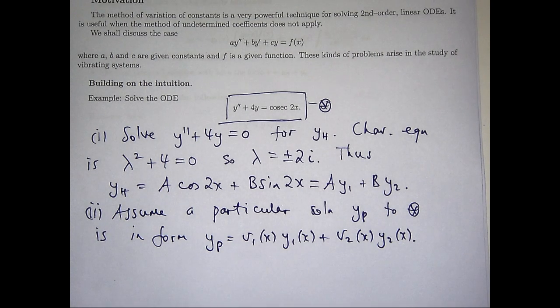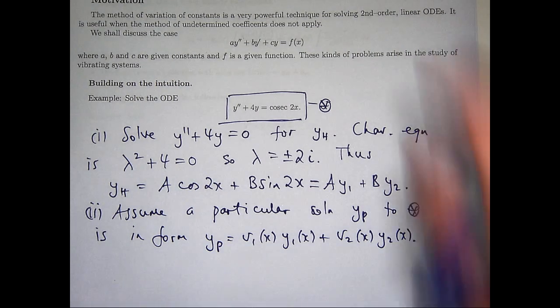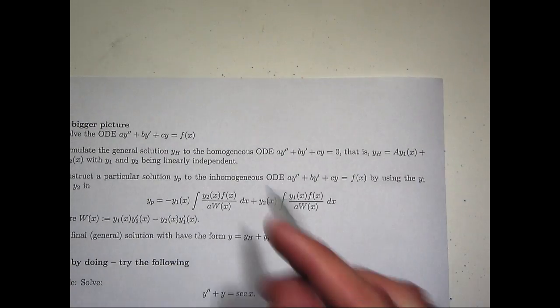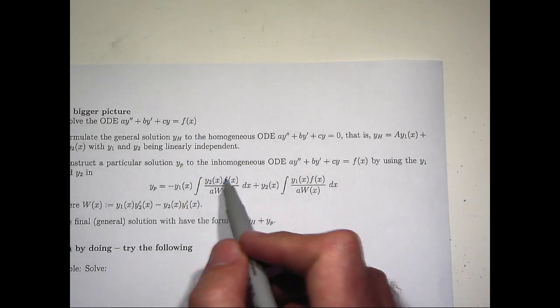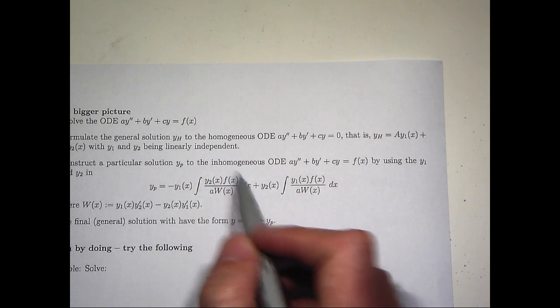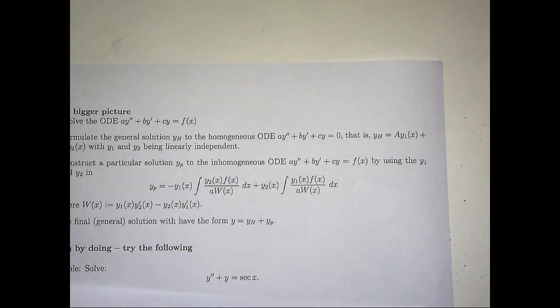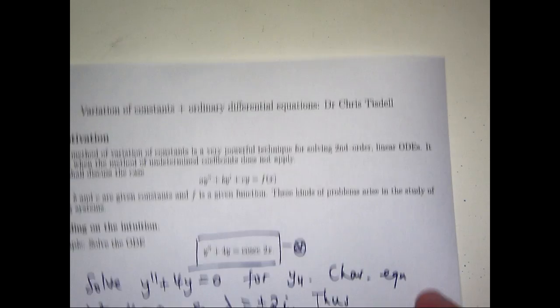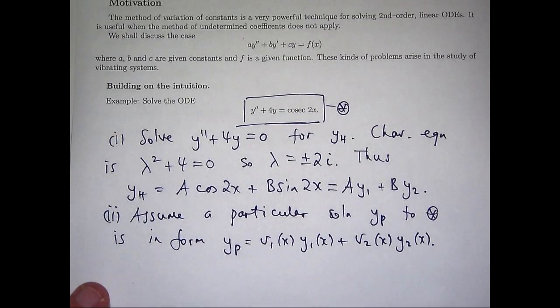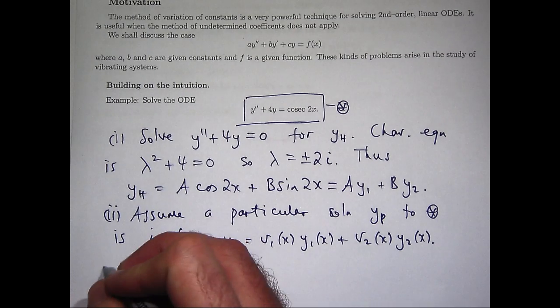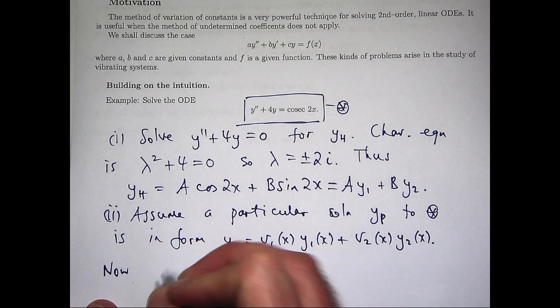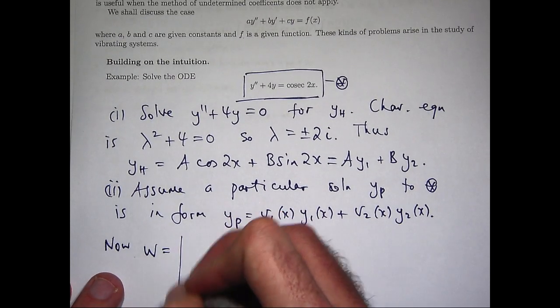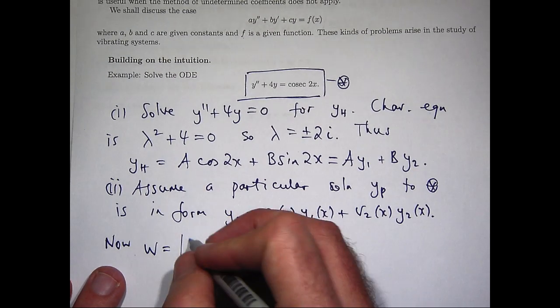Let's build v1 and v2 just by applying the formula from the previous page. Now to apply the formula, so the minus of this integral would be your v1. Now to apply that, you need this W, which is the Wronskian. So let's just actually compute the Wronskian first.